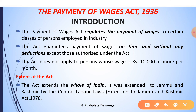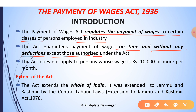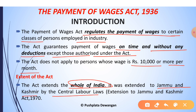The Payment of Wages Act regulates the payment of wages to certain classes of persons employed in an industry. The Act guarantees payment of wages on time and without any reductions except those authorized under this Act. This Act does not apply to persons whose wages are 10,000 or more per month. The Act extends to the whole of India and was extended to Jammu and Kashmir by the Central Labour Laws Extension to Jammu and Kashmir Act of 1970.